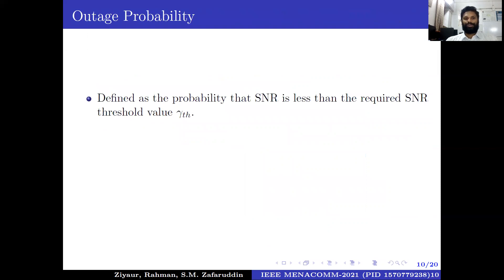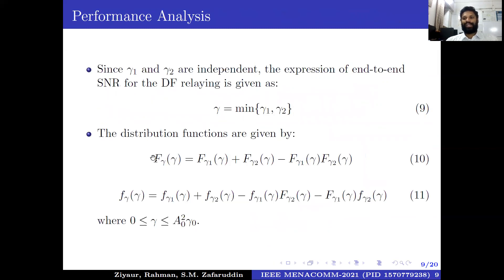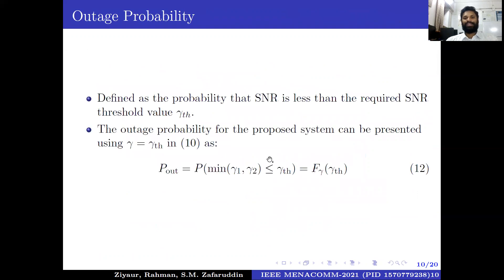Outage probability is defined as the probability that the SNR is less than the required SNR threshold γ_t. The outage probability for the proposed system is derived using Equation 10, substituting γ equal to γ_th, to obtain the outage probability given by Equation 12.